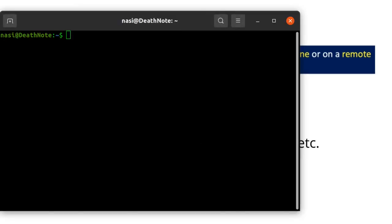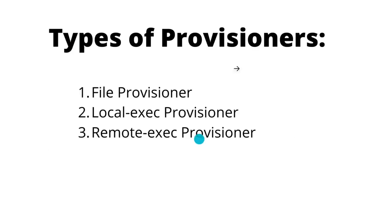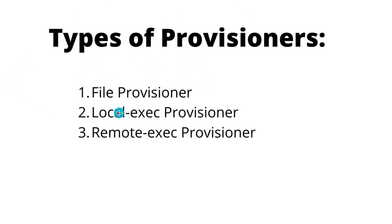Before going ahead, let's learn about the types of Provisioners. There are three types: the first is the file Provisioner, the second is local-exec, and the third is remote-exec.